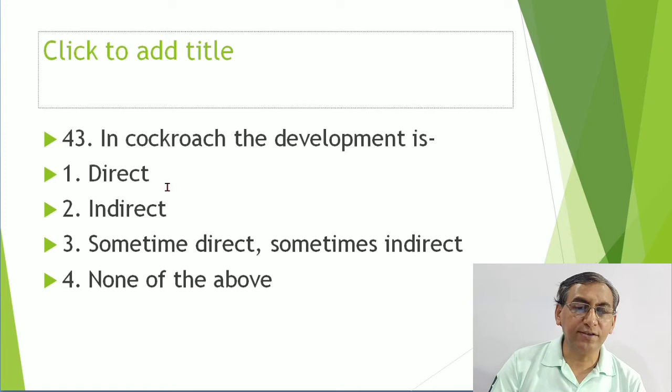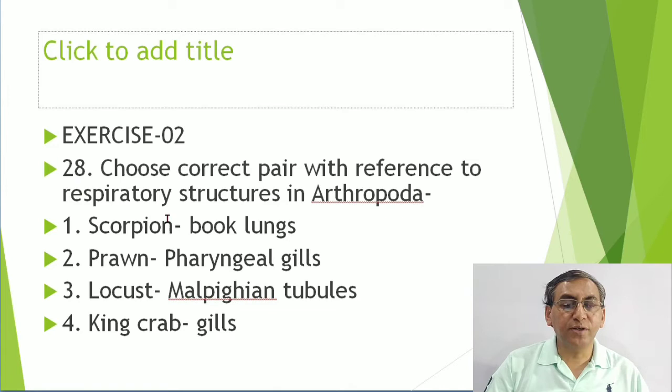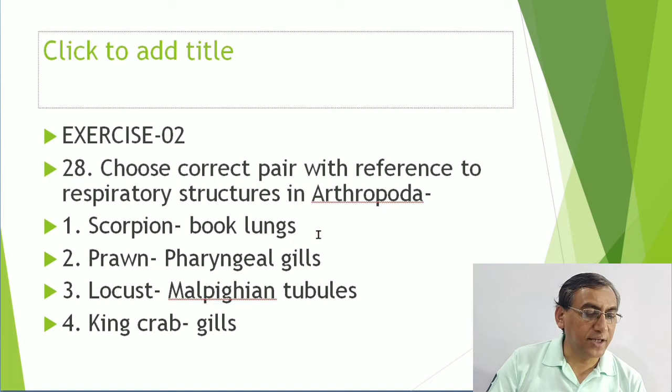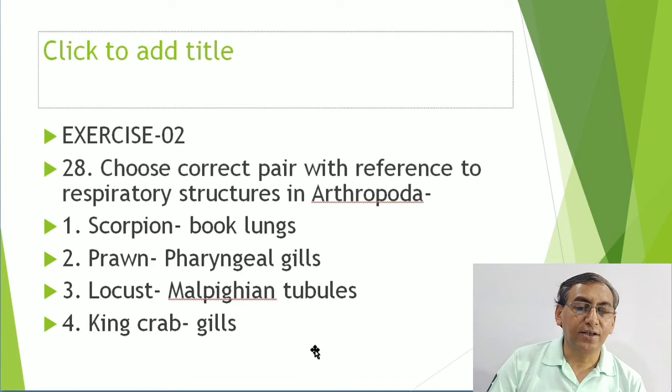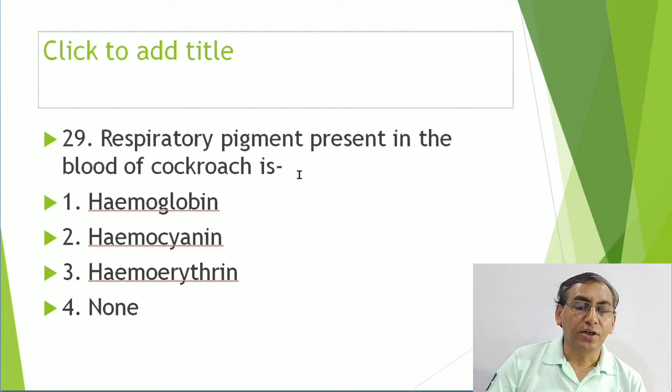Choose the incorrect pair regarding respiratory structures: scorpion has book lungs - correct; Crustacea do not have phalanges, they have gills; Locusta has Malpighian tubules which are excretory, not respiratory structures - that is incorrect. Limulus (king crab) has book gills.